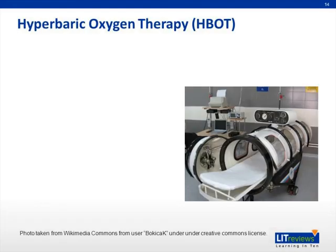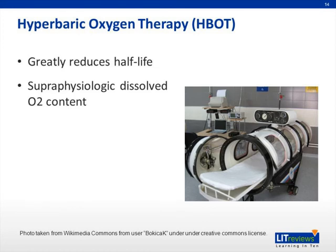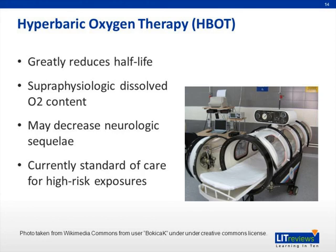For high-risk or severely poisoned patients, hyperbaric oxygen therapy may be the preferred treatment modality. As shown in the previous table, hyperbaric oxygen greatly reduces the elimination half-life of carboxyhemoglobin to as little as 20 minutes when treated at 2.5 atm. In addition, you can increase the total blood dissolved oxygen content. And while studies are still controversial, this may decrease the delayed and persistent neurological sequelae. Hyperbaric oxygen therapy is currently recommended for any patient over the age of 50, patients with a metabolic acidosis, history of loss of consciousness, pregnancy, or any carboxyhemoglobin level greater than 25%.